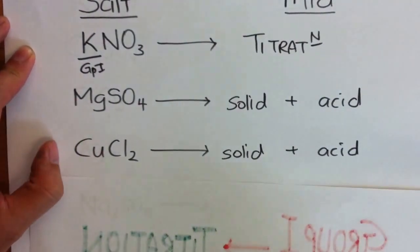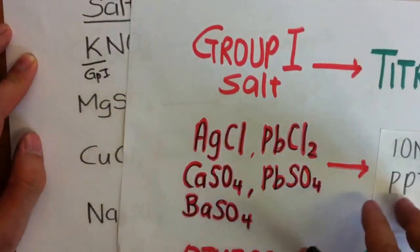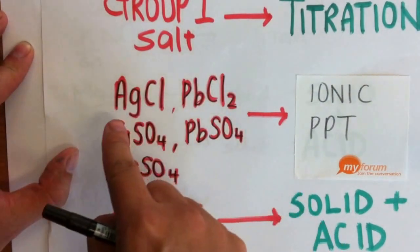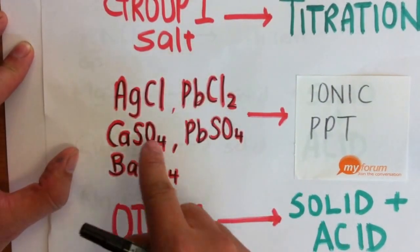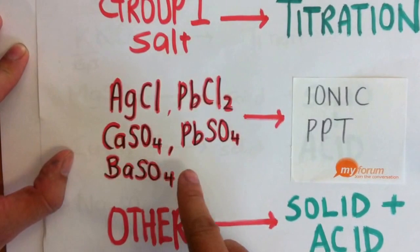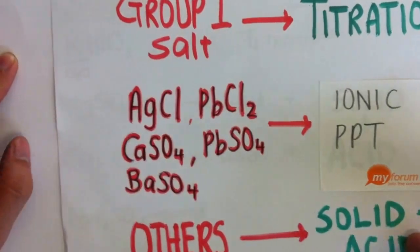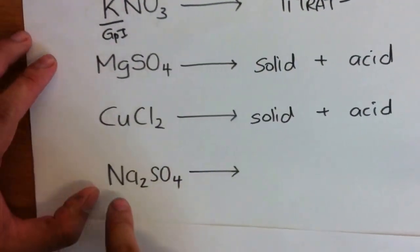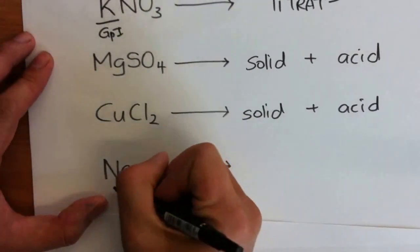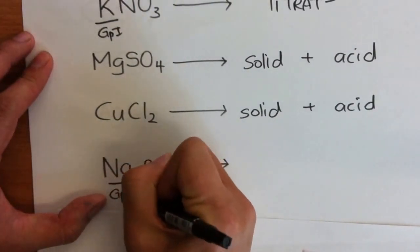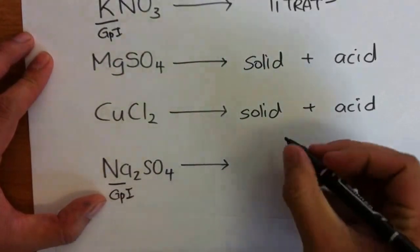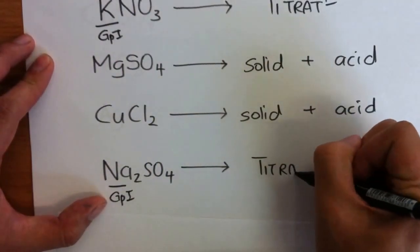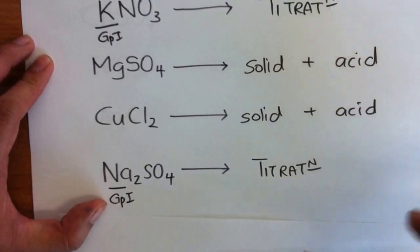When I'm talking about the 5, I'm talking about these 5 here. Copper chloride is none of these 5, magnesium sulfate is none of these 5, so they belong to the others. The last one: sodium sulfate. Sodium is in group 1, so it is a group 1 salt, and I will use the method of titration.